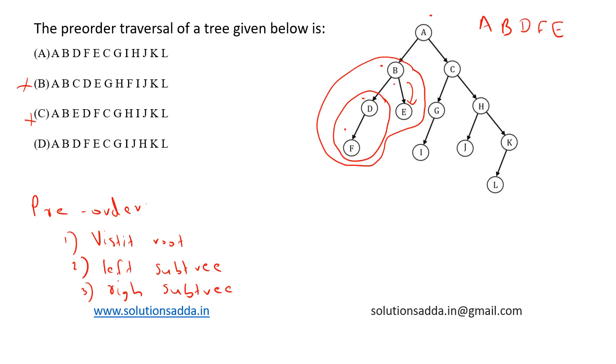A B D F E - till this part it is correct. Both A and D are matching till now. Now this left traversal is complete. Now we move on to the right subtree, that is this whole part. Here we visit the root and we print C.